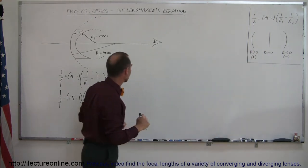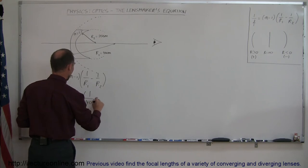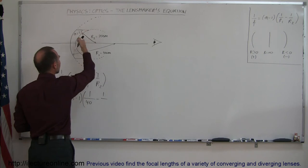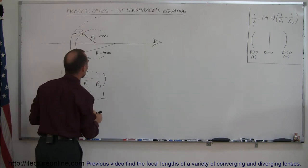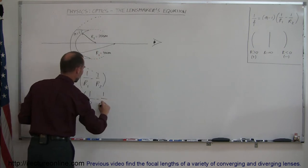So that's a positive radius of curvature of 40 centimeters minus 1 over r2. Now r2 is also curved towards the left, so that is also a positive radius of curvature. And that would be 20 centimeters, so minus 20.